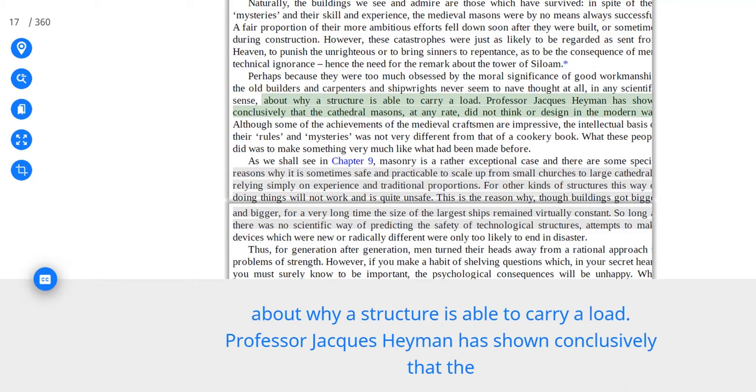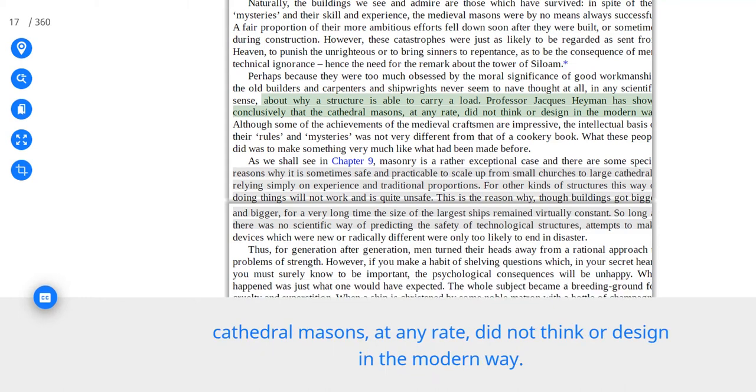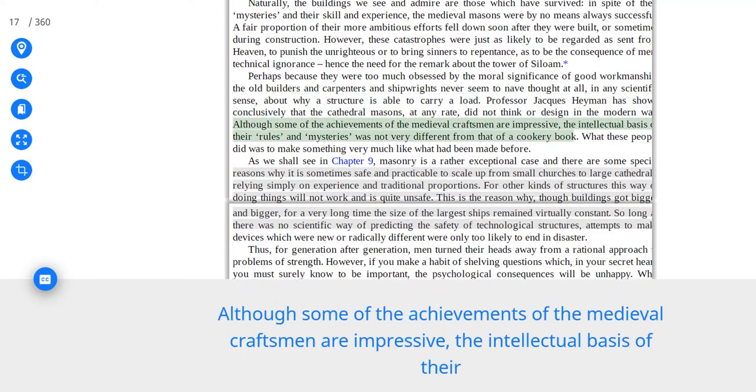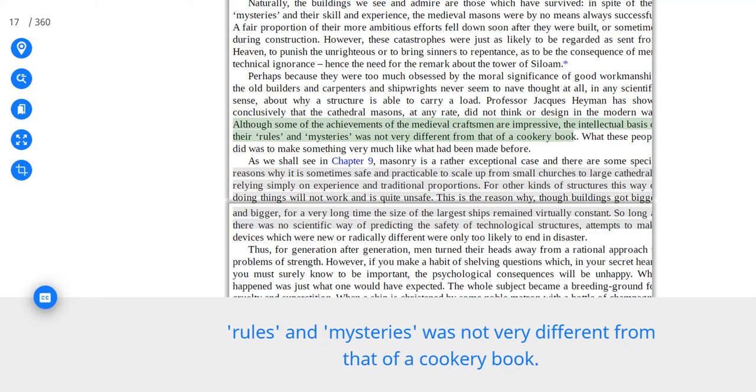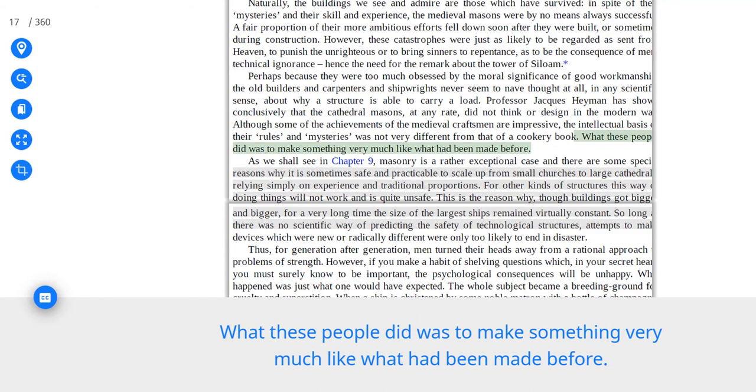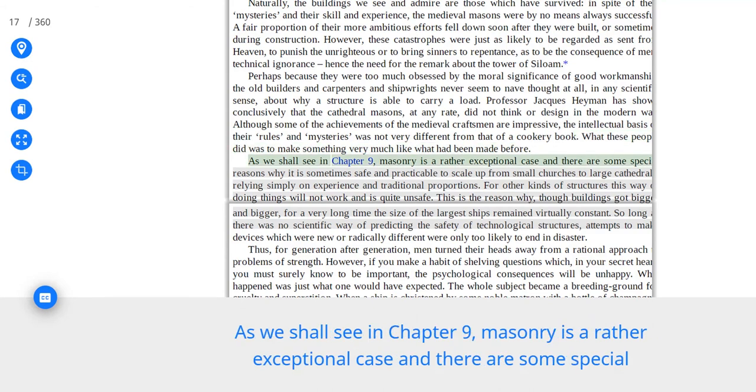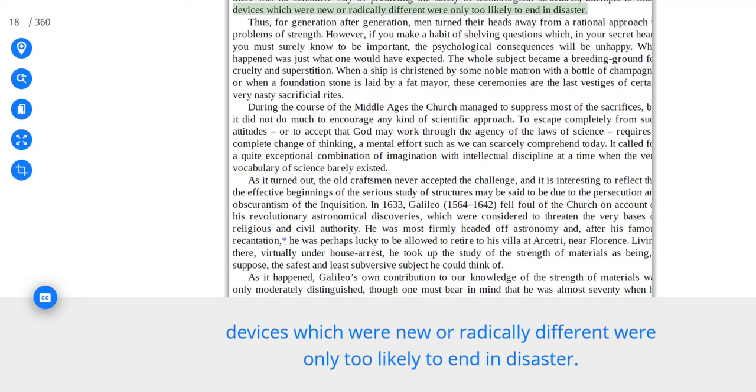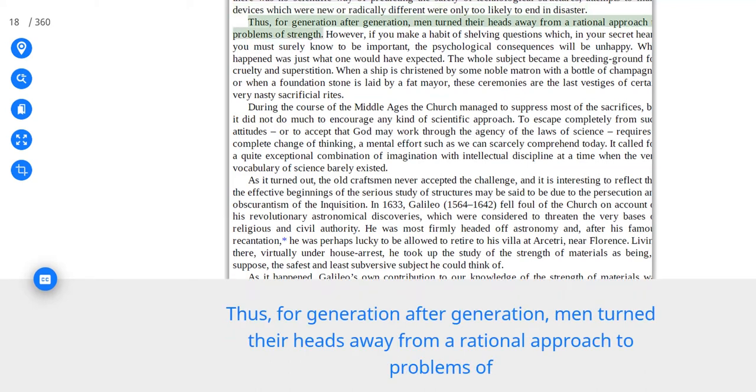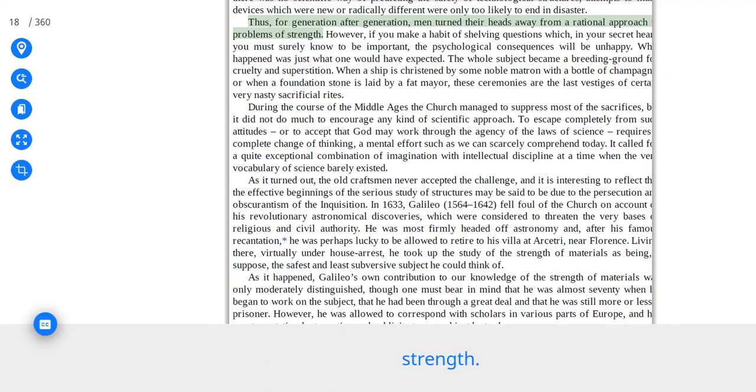Perhaps because they were too much obsessed by the moral significance of good workmanship, the old builders and carpenters and shipwrights never seemed to have thought at all, in any scientific sense, about why a structure is able to carry a load. Professor Jacques Heyman has shown conclusively that the cathedral masons, at any rate, did not think or design in the modern way. Although some of the achievements of the medieval craftsmen are impressive, the intellectual basis of their rules and mysteries was not very different from that of a cookery book. What these people did was to make something very much like what had been made before. As we shall see in Chapter 9, masonry is a rather exceptional case and there are some special considerations. Devices which were new or radically different were only too likely to end in disaster. Thus, for generation after generation, men turned their heads away from a rational approach to problems of strength.